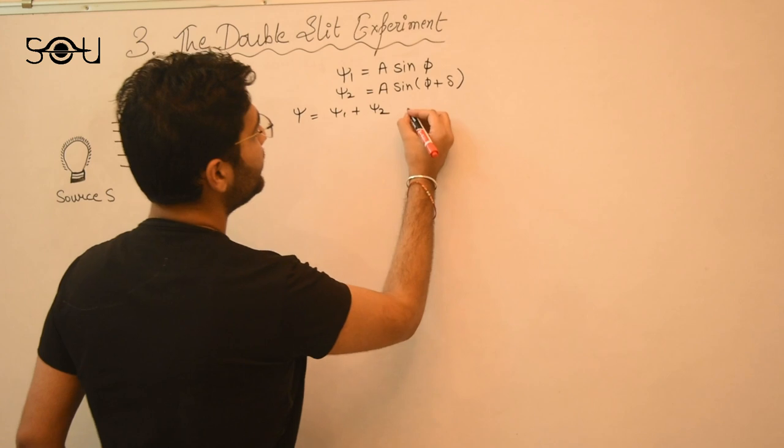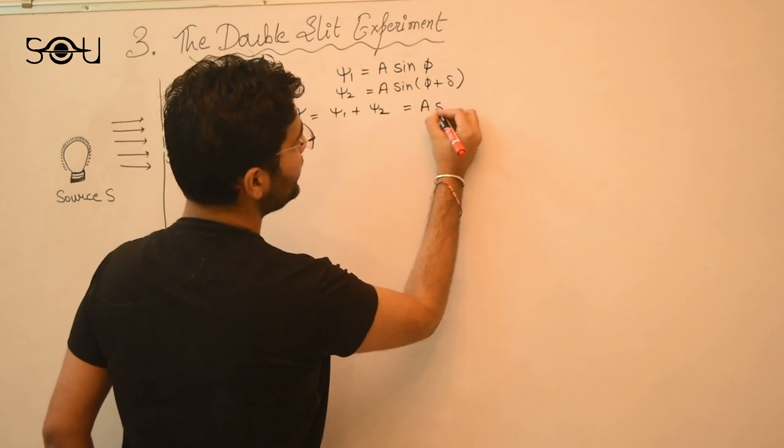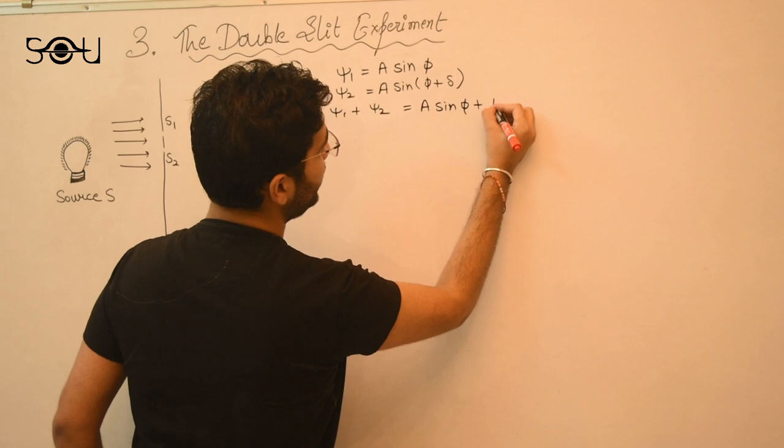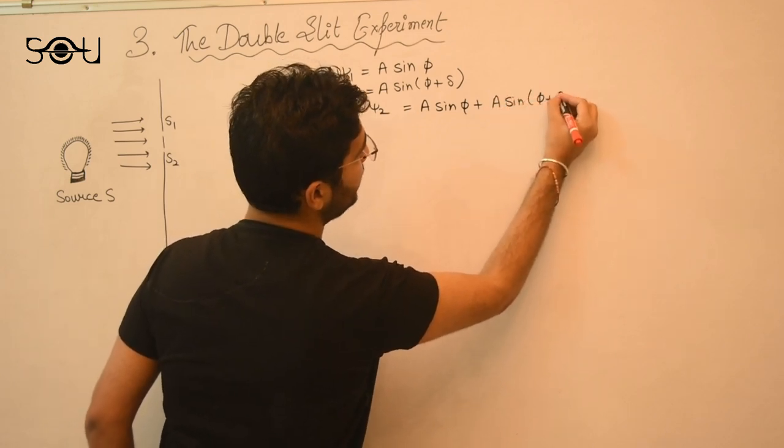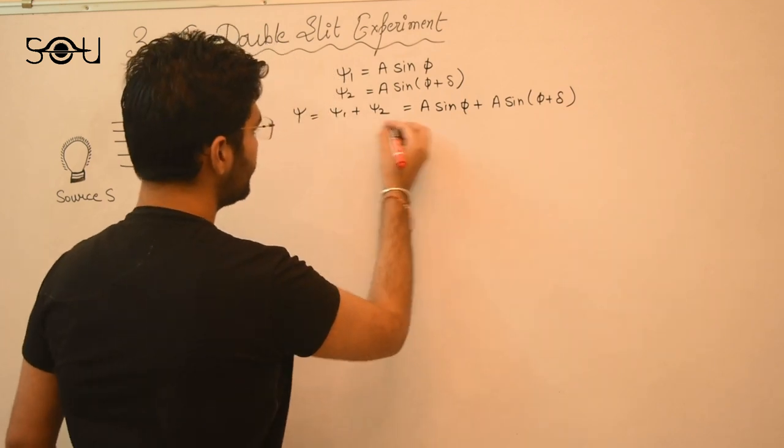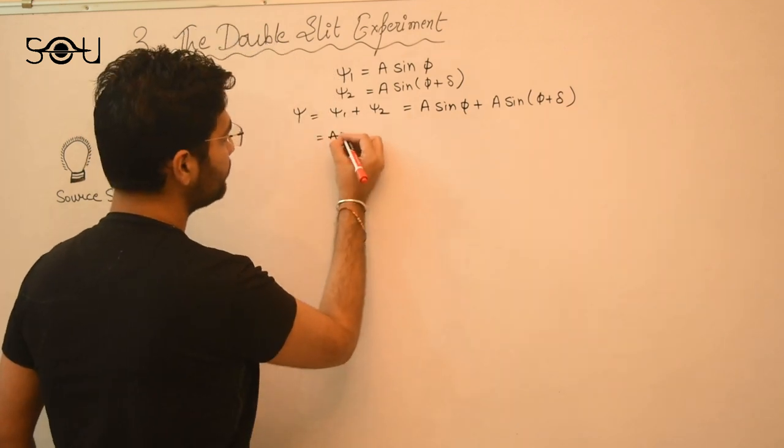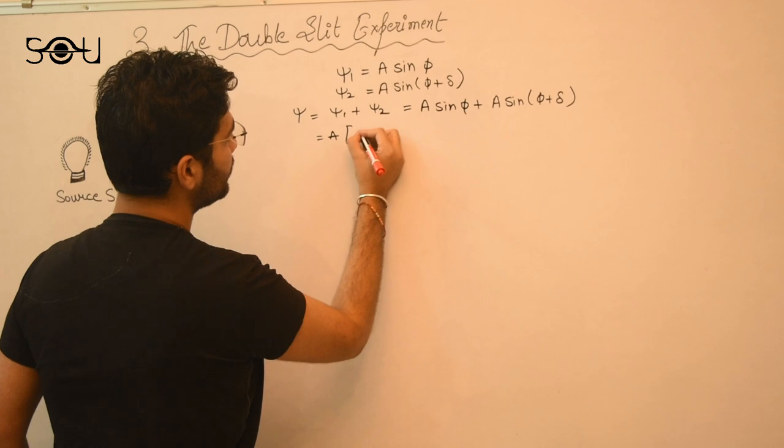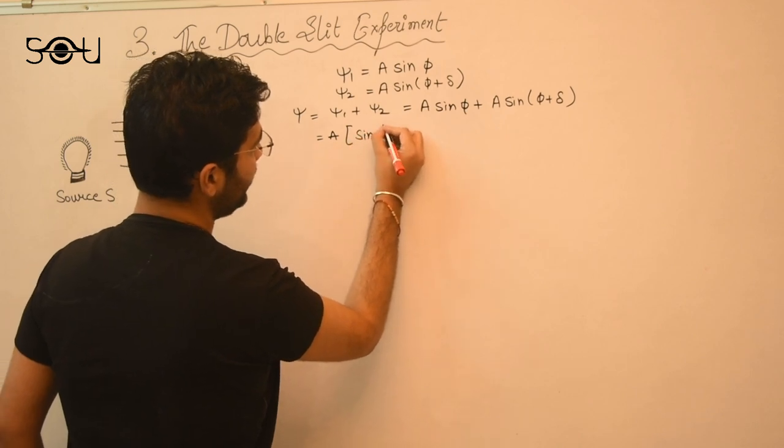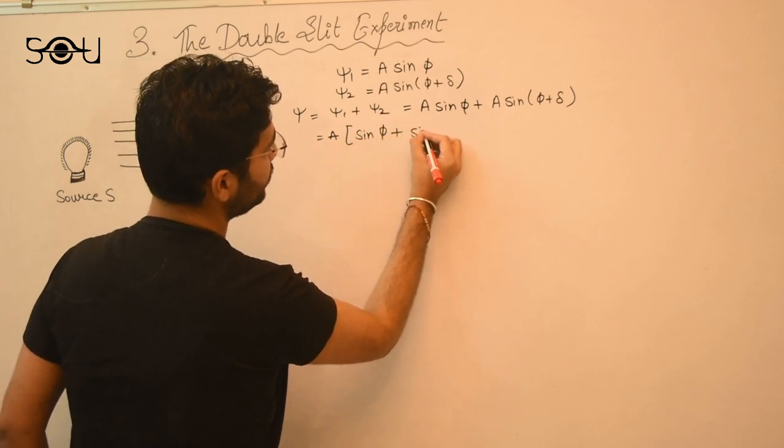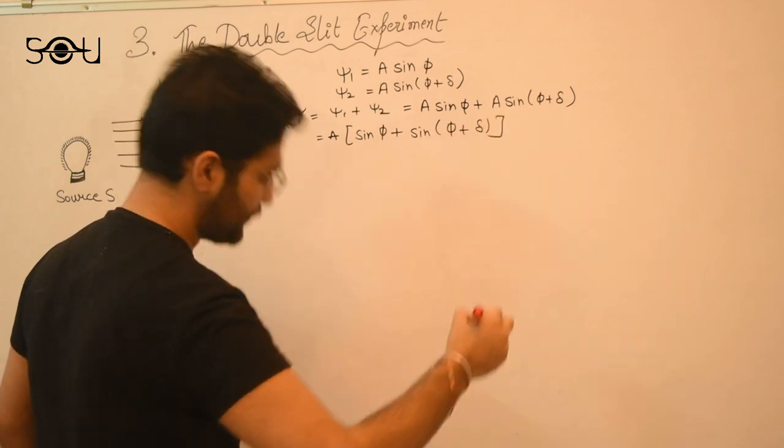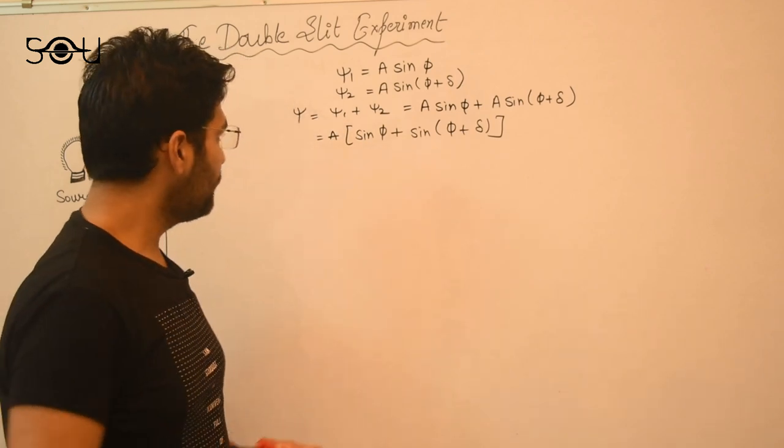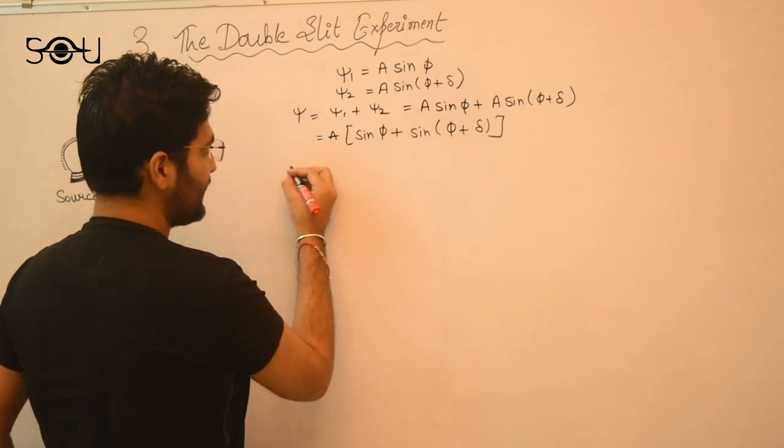Delta arises because waves might travel different distances to reach a particular point on the screen. So the resultant of these two waves will be xi, xi1 plus xi2. So when you add them, A sin of phi plus A sin of phi plus delta. You take A common: A times sin of phi plus sin of phi plus delta. Simple mathematics so far. So now, two cases arise.